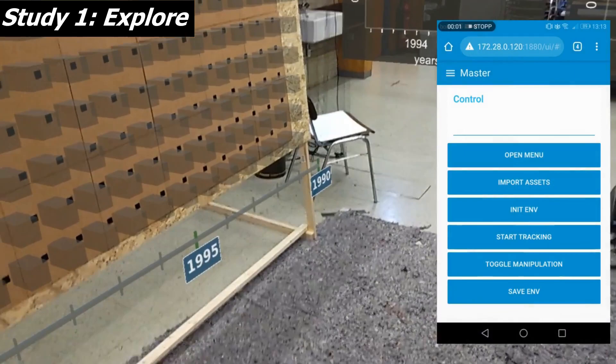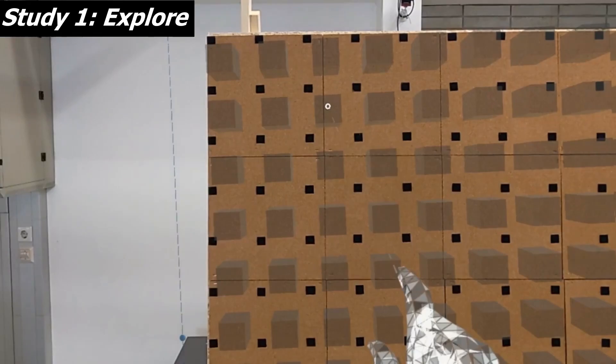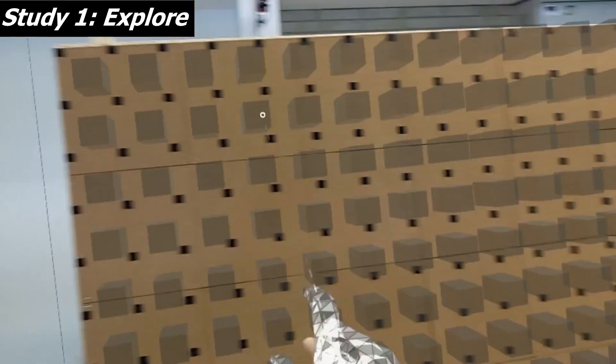Supported by RagRug, wearing the HoloLens and running the Mopop application, he sets up the virtual exhibition environment. A second screen application on the mobile phone allows the user to enter the manipulation mode and to save all changes.